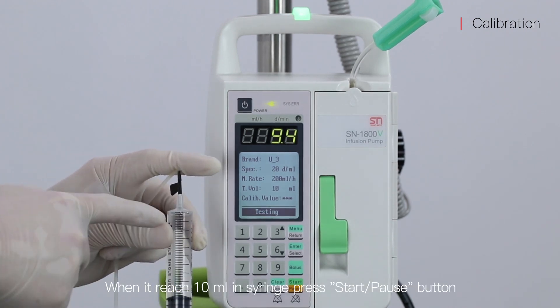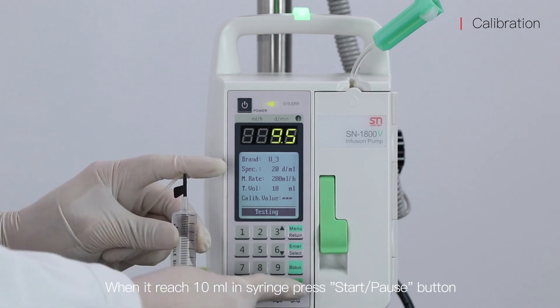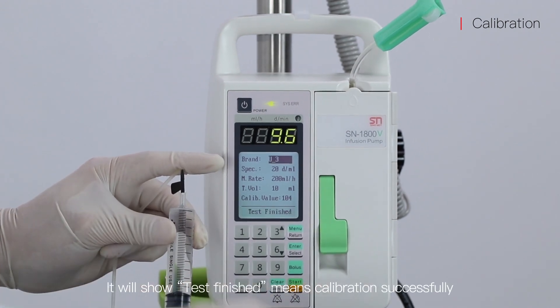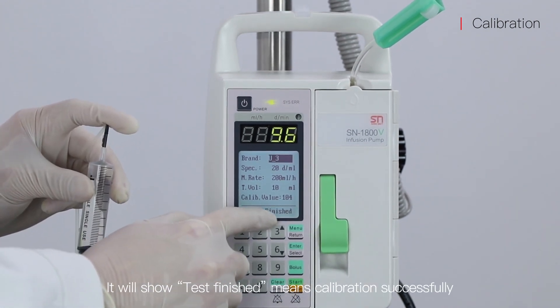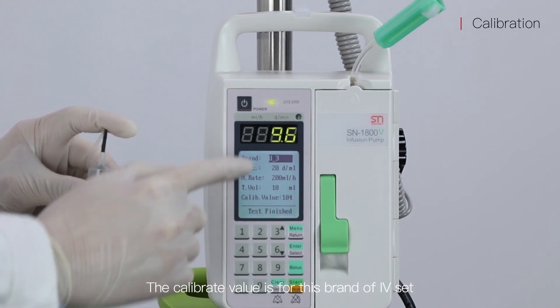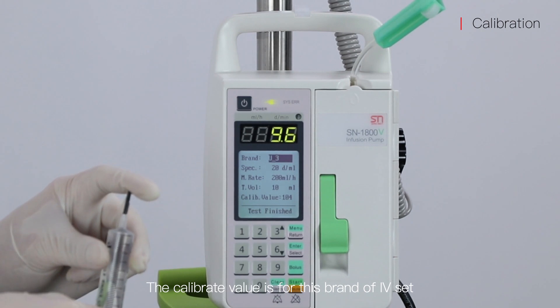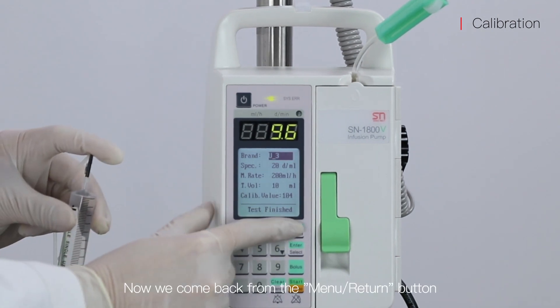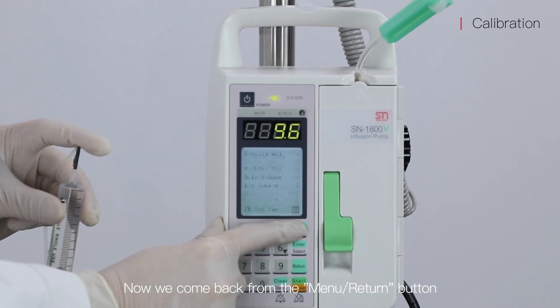When it reaches 10ml in the syringe, press the start pulse button. It will show test finish, which means calibration was successful. The calibration value is for the brand of IV set. Now we come back from the manual return button.